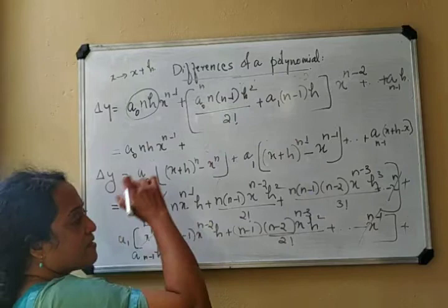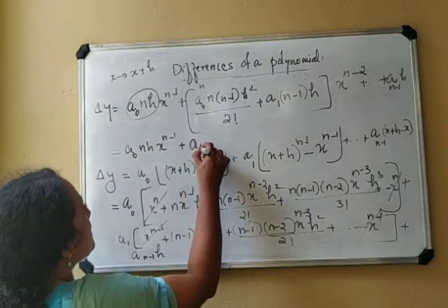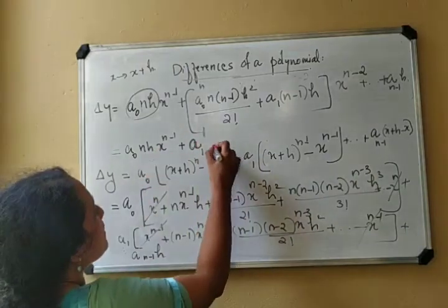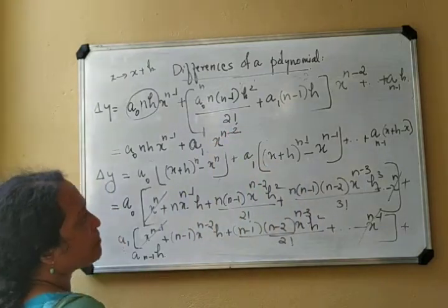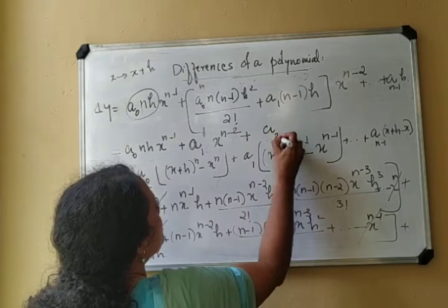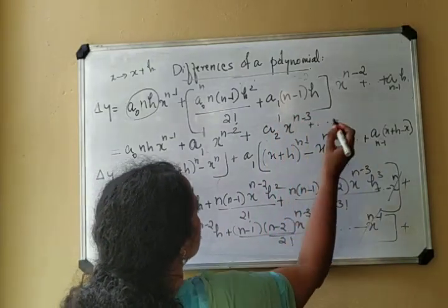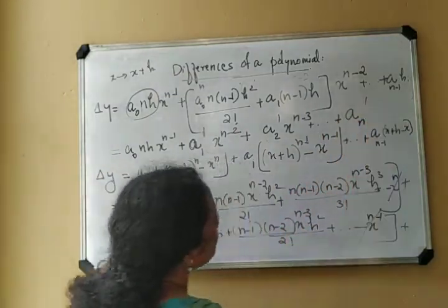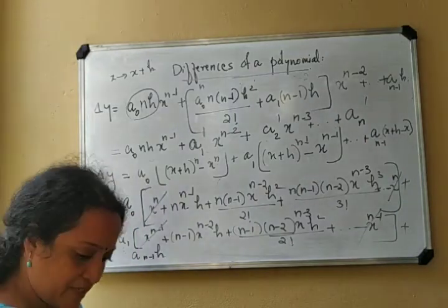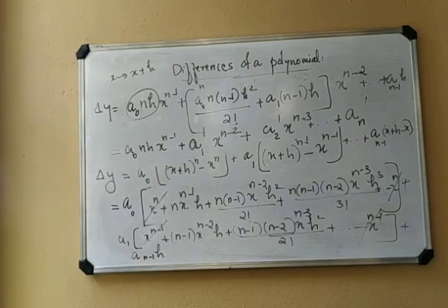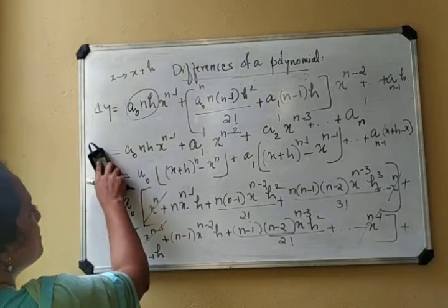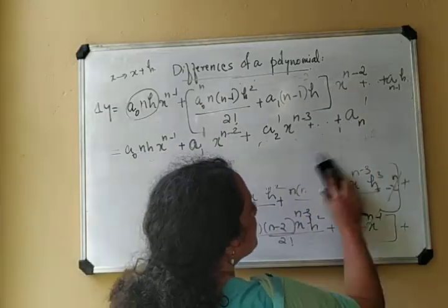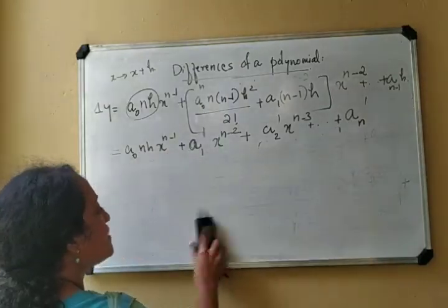So we may write this as a0·n·h·x^(n-1) + a1'·x^(n-2) + a2'·x^(n-3) + ... + an'. We use a1', a2', etc. since a1, a2 were used earlier. So when we take the first difference, we are getting a polynomial of degree n-1. The first difference of a polynomial of degree n is a polynomial of degree n-1.